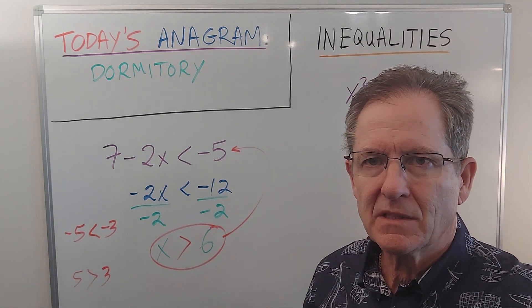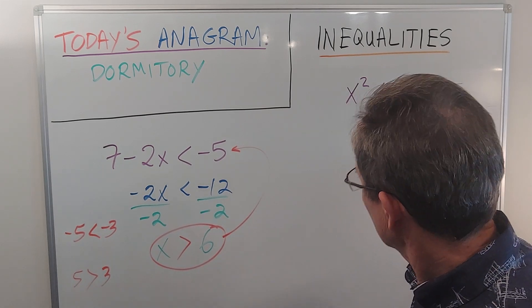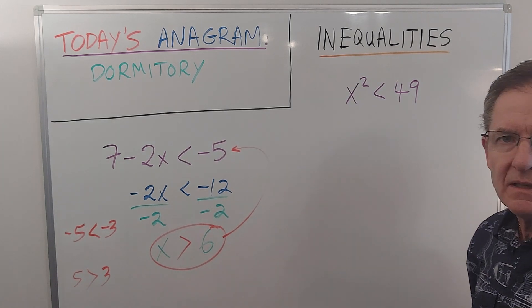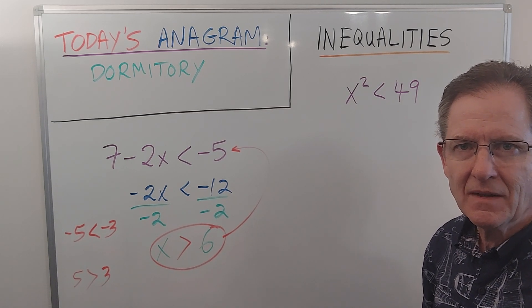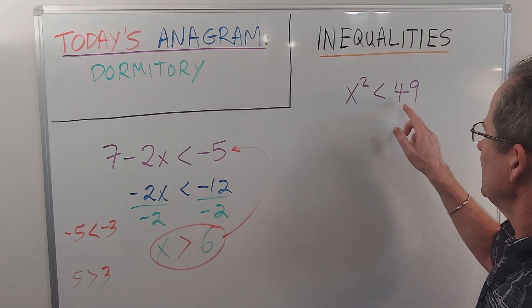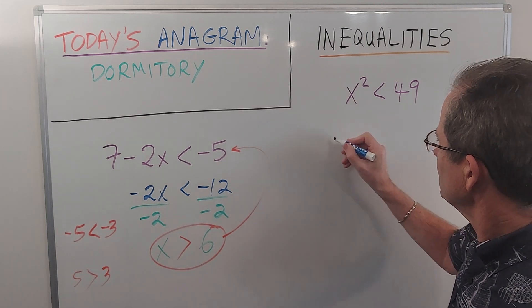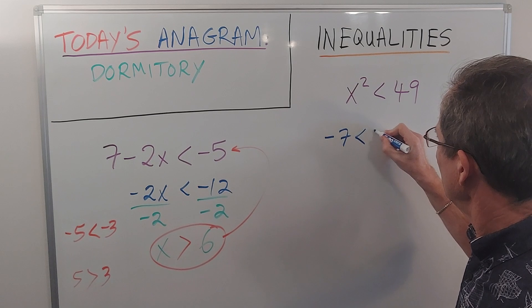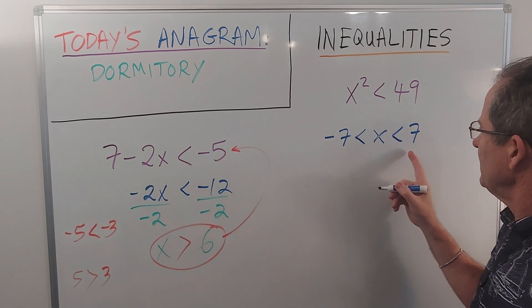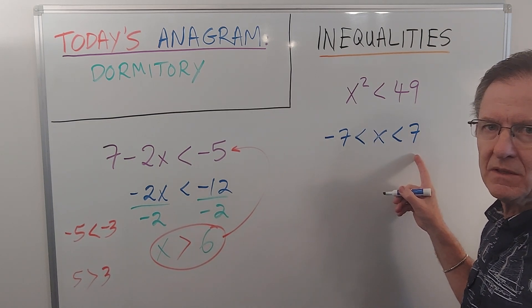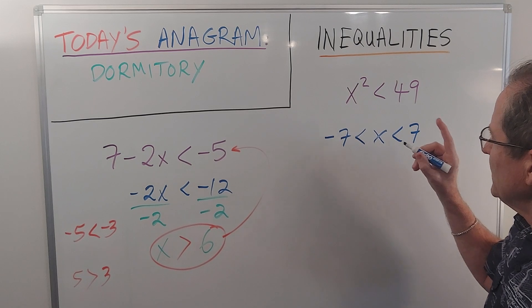Now let's consider this inequality: x squared is less than 49. Can you do that one in your head? Well, we know the square root of 49 is 7, so it's going to be related to 7. And if you're good at this, you'll know that the answer is negative 7 is less than x, which in turn is less than positive 7. Any number between negative 7 and 7, not including negative 7 and 7, if you square it will give you a number less than 49.